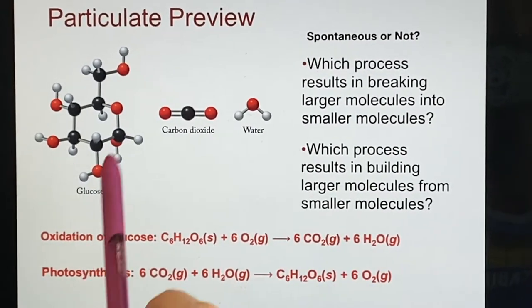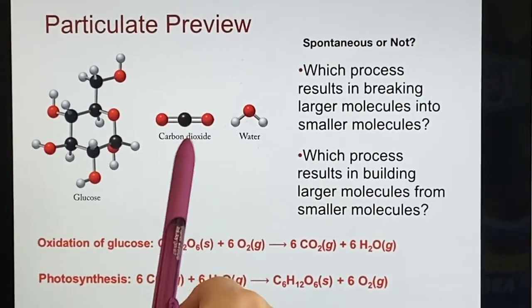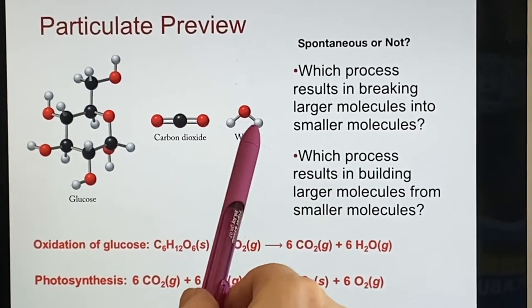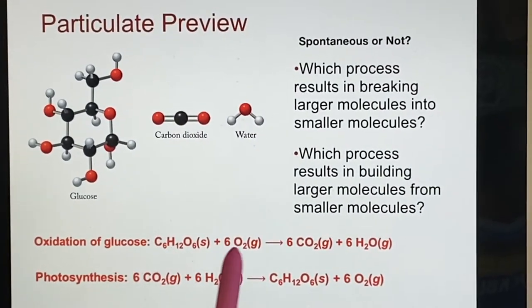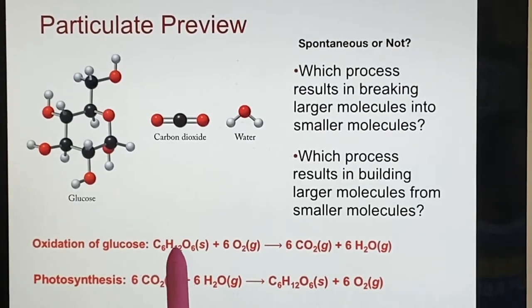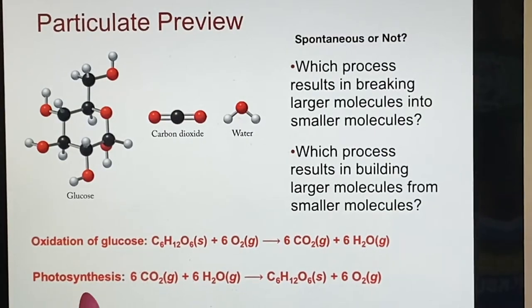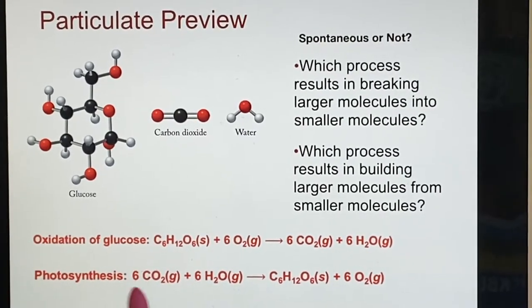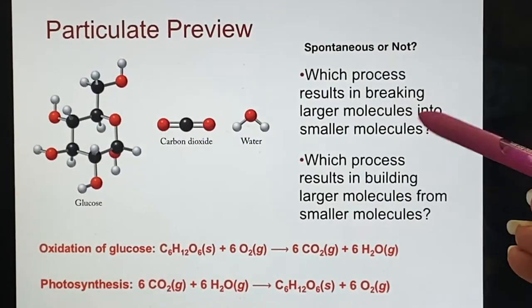Well, obviously there's a lot of, this is one big connected thing. It's broken up into these smaller molecules. So when we're doing this oxidation of the glucose, that's the one that's breaking larger ones into smaller ones. And the opposite photosynthesis is taking the smaller ones and building it into larger molecules.